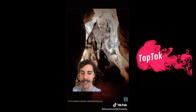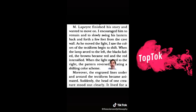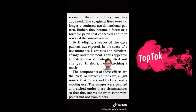Then in 1993 a German scholar went into a cave in southern France, and it changed everything. Unlike other caves, this one was poorly funded with no artificial lights — he was guided by a local farmer with only a flickering lantern. He described: 'I encouraged him to slowly swing his lantern back and forth a few feet from the cave wall. As the light moved, the colors of the tectiform began to shift — blacks faded, browns became red, reds intensified. The engraved lines became animated; suddenly the head of one creature stood out, lived for a second, then faded as another appeared. The spaghetti lines became a forest or a bramble patch that concealed and then revealed the animals within.'